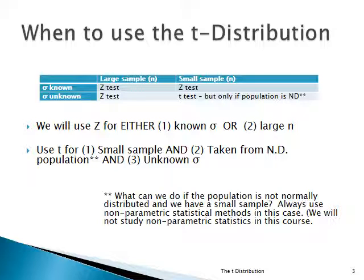What do we do then? If the population that the data came from is normally distributed, we can use the Student's t-statistic. What happens if not? As far as this course goes, we're stuck. But what you have to do is take another, more advanced class in statistics and learn about non-parametric statistical methods.